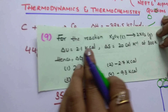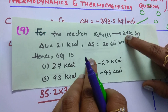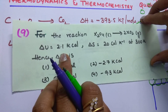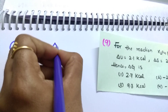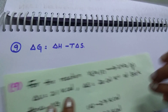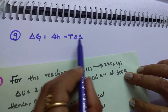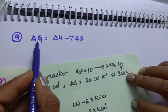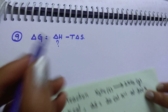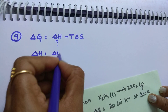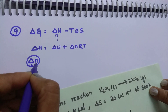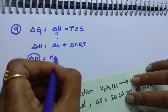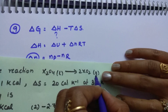Question number 9: For the reaction X2O4 (liquid) converts to 2XO2 (gas), delta U is given and delta S is given — you have to find delta G. Delta G equals delta H minus T·delta S. Delta S and T are given, but delta H is not given, so you have to calculate it. Use the formula: delta H equals delta U plus delta·n·R·T.